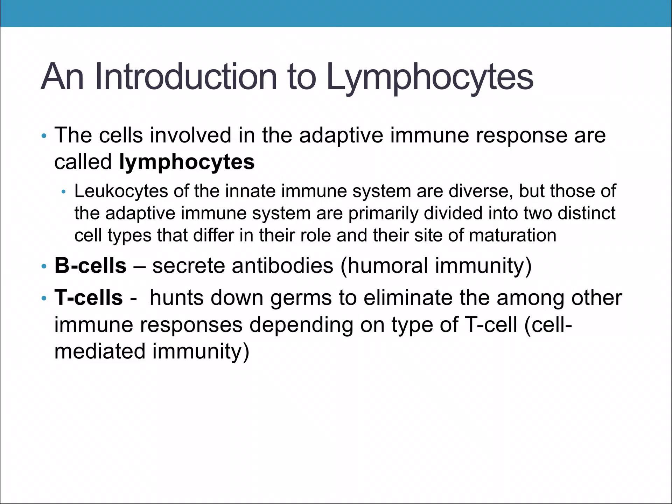Leukocytes of the innate immune system are diverse — there are different types we talked about, like eosinophils and neutrophils. But those of the adaptive immune system are primarily involved in two distinct types, having to do with their site of maturation — where they become immunocompetent, meaning where they become able to recognize self from non-self.